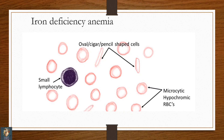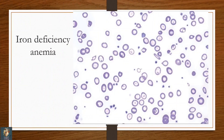Remember, you have to compare the size of the RBC with that of the nucleus of the small lymphocyte. Another view of iron deficiency anemia — you can appreciate microcytic hypochromic RBC population, pencil cells, and target cells. The diagnosis is iron deficiency anemia.